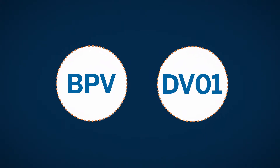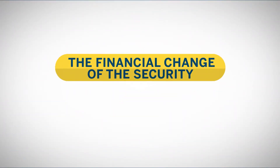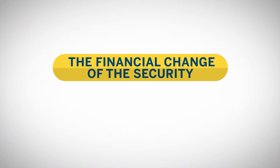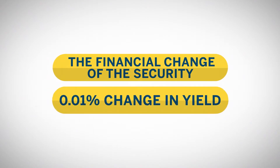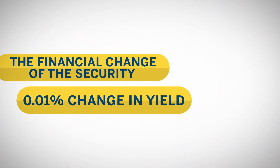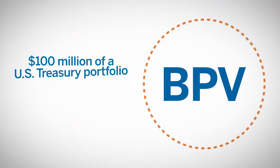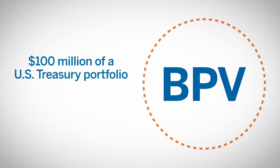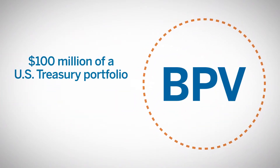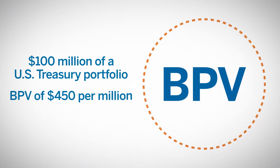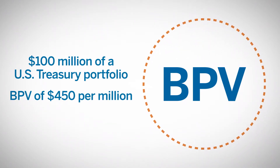They all refer to the same thing – the financial change of the security, or portfolio, to a 0.01% change in yield. For example, we are long $100 million of a U.S. Treasury portfolio with an average BPV of $450 per million.